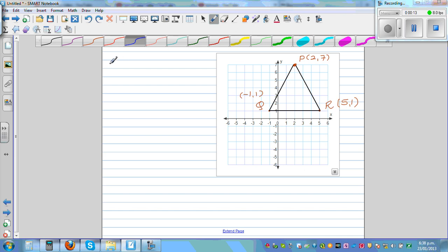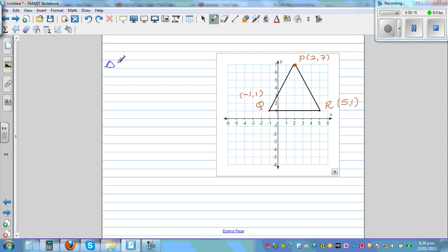We want to prove that this triangle PQR is an isosceles triangle. Now what is an isosceles triangle? An isosceles triangle, which implies two sides are equal. Any two sides, if they are equal, we can see it's an isosceles triangle. Two sides are equal.